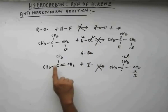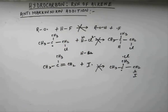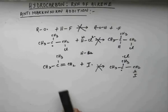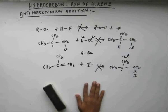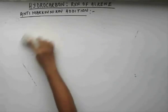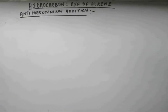To summarize: the second step of chain propagation cannot occur with chlorine, the first step of chain propagation cannot occur with iodine, and the second step of chain initiation cannot occur with fluorine. So HF, HCl, and HI do not show anti-Markovnikov addition. It is exclusively for HBr — anti-Markovnikov addition is shown only by HBr. That's all from this reaction. Let's solve some problems.